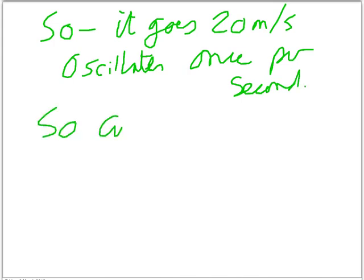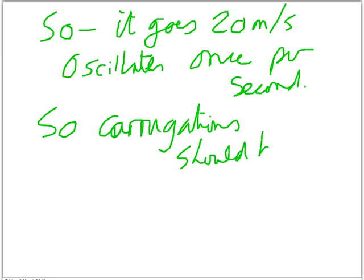So corrugations should be 20 meters across. Not 20 centimeters. Whoops. So that looks pretty bad for this theory. I don't think this is a sensible theory. If cars are oscillating in roads, it should lead to a very big, gentle, 20 meter long oscillations. Not little tiny, few centimeter ones.